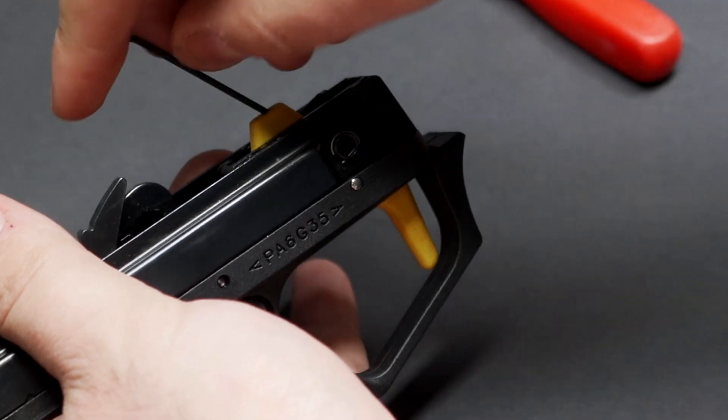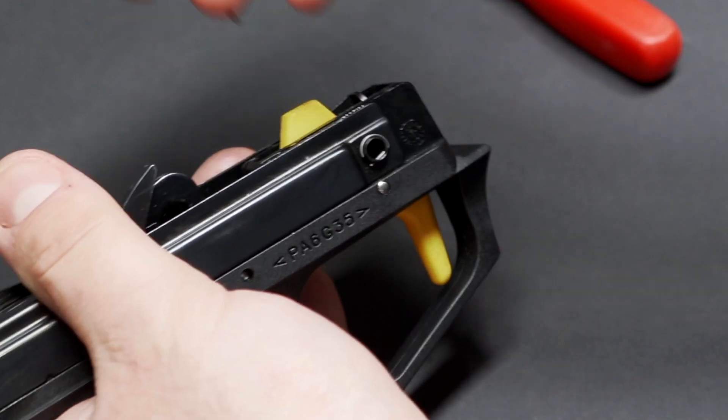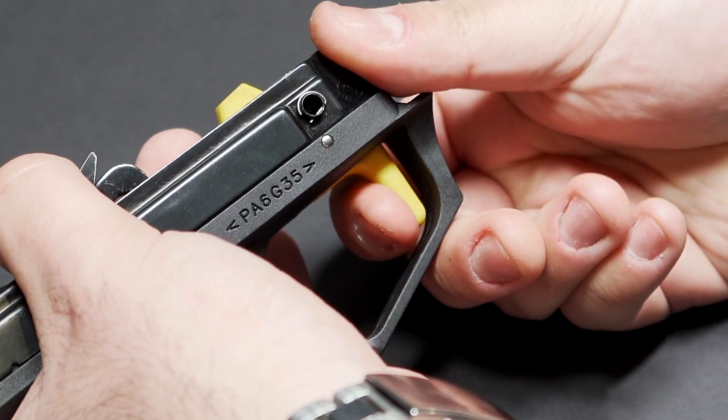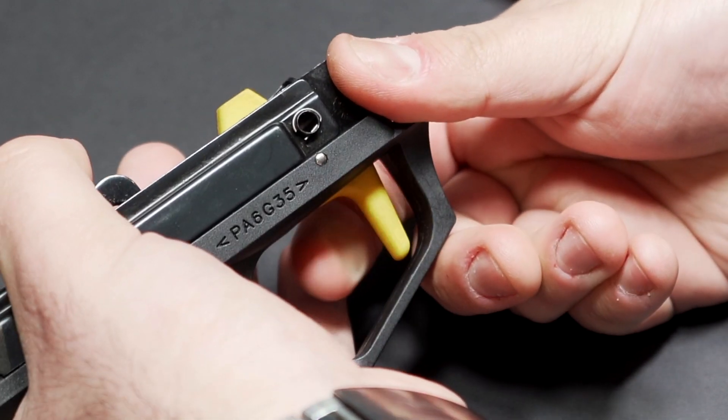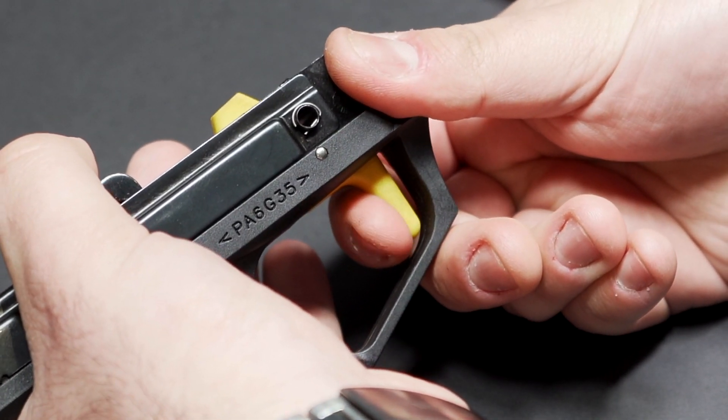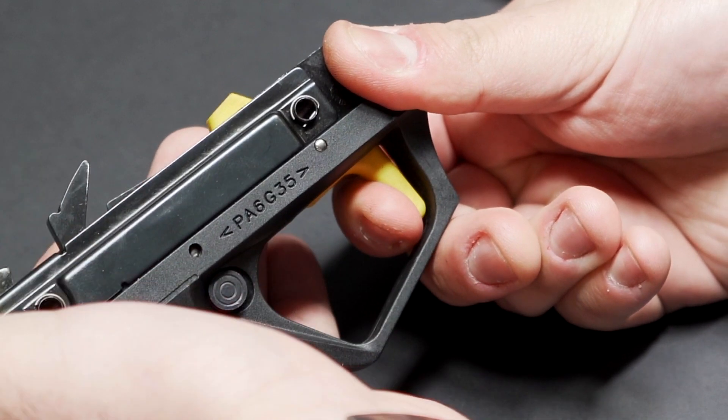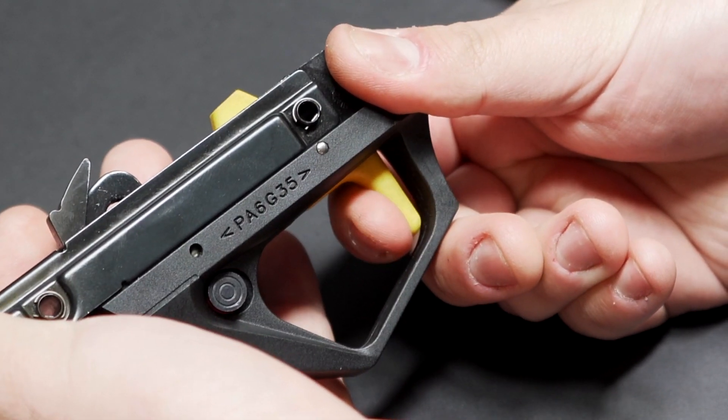So if you so choose, you can actually adjust this pre-travel to give you a proper two stage trigger. So if you just wind that out to the desired amount, you can have as much take up as you like before you hit the wall, the second stage, and then your brake from there. So you can turn your Supernova into a proper two stage trigger, fully adjustable using this.